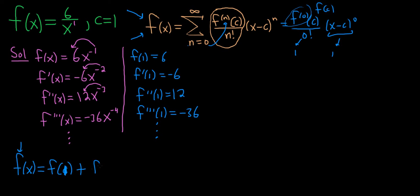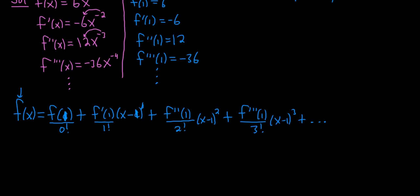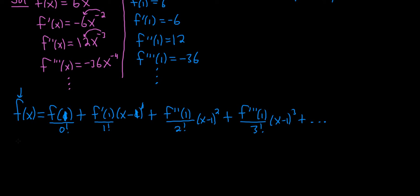Plus, the next one will be the first derivative. So f prime of 1 times x minus 1 to the 1 over 1 factorial. Then f double prime of 1 over 2 factorial times x minus 1 squared. So maybe you're starting to see the pattern now. You see it's 0 factorial, 1 factorial, 2 factorial. The next one will be f triple prime of 1 over 3 factorial times x minus 1 to the 3, etc. So it's an infinite series.